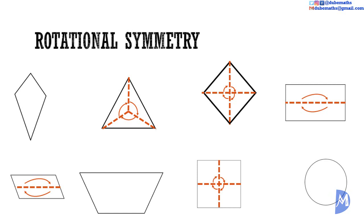Through these examples, we saw plane figures with rotational symmetry of order one, two, three, four, and even infinity. Further, we saw that the kite, which has line symmetry, has no rotational symmetry. And the parallelogram, which has no line symmetry, has rotational symmetry. Thus, showing the importance of being clear about whether it is line symmetry or rotational symmetry you are discussing.